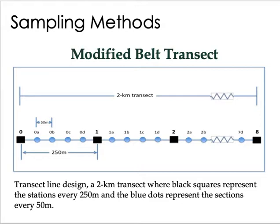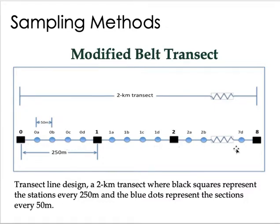A belt transect, for example, has a minimum of 2 kilometers and is divided into different major points of 250 meters. Each major point is further divided into sub-points with a 50-meter distance. This is done because there are instances where you cannot finish the full 2,000-meter transect, especially in a forest area, which can be quite difficult.